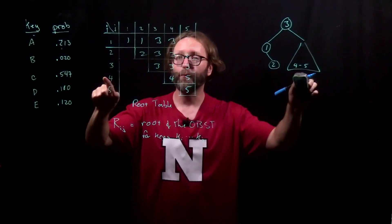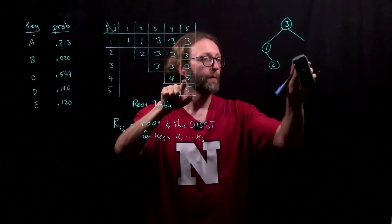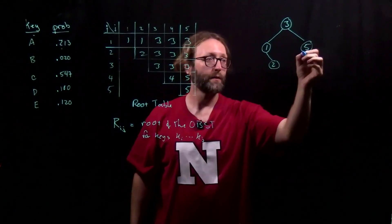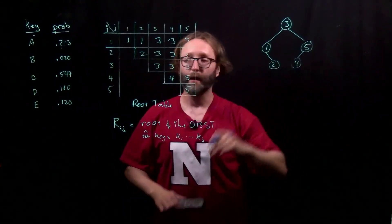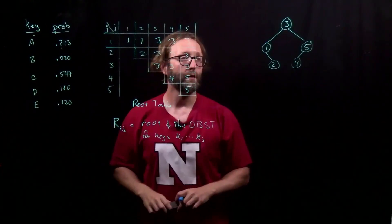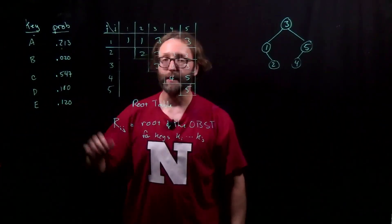For the right subtree, we look up the table for 4 to 5 and it says that 5 should be our root. There is no right subtree and 4 ends up being its own root. And that will be the optimal binary search tree for this particular input.